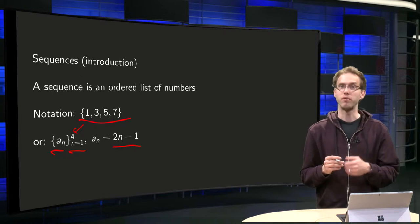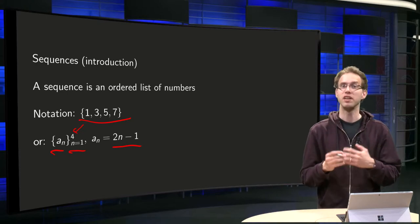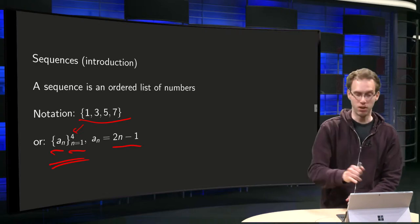So if n equals 1, we have 2 times 1 minus 1 equals 1. And n equals 2, we get 4 minus 1 equals 3, etc. So this is the way sequences are usually denoted.